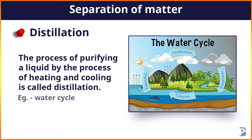Now next is distillation. The process of purifying a liquid by heating and cooling is called distillation. You can also describe it as purifying a liquid by the process of evaporation and condensation. For example, the water cycle.